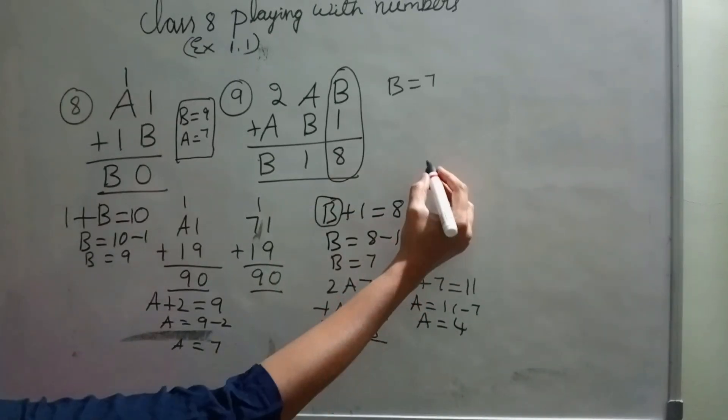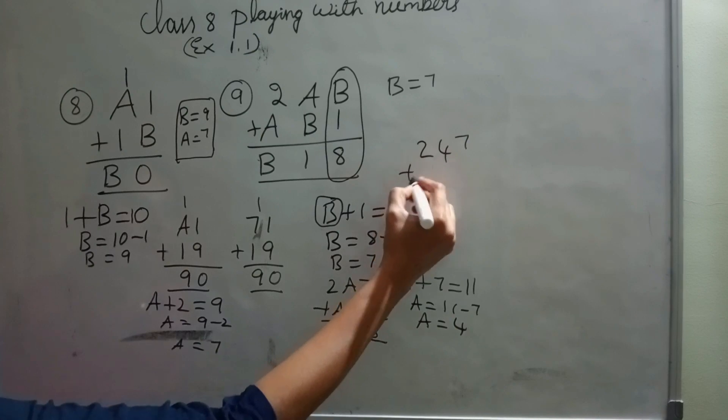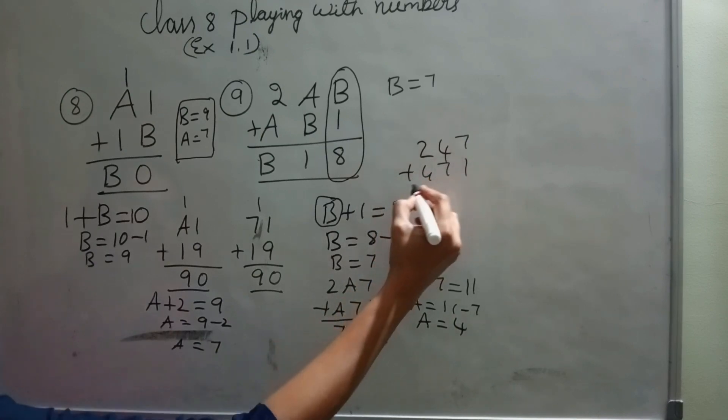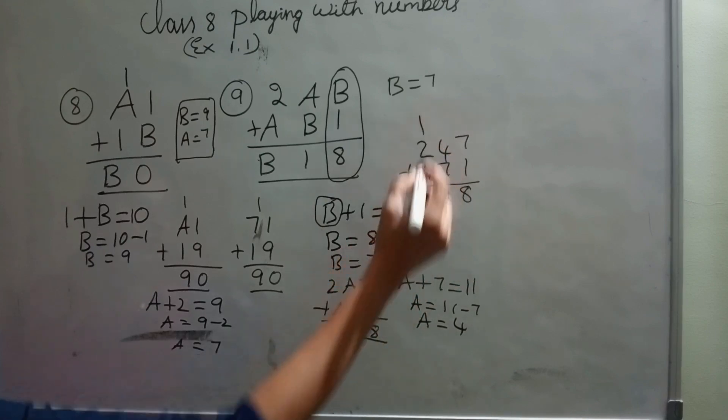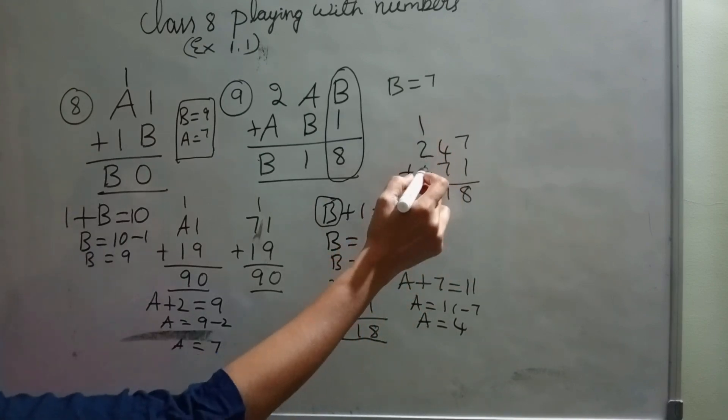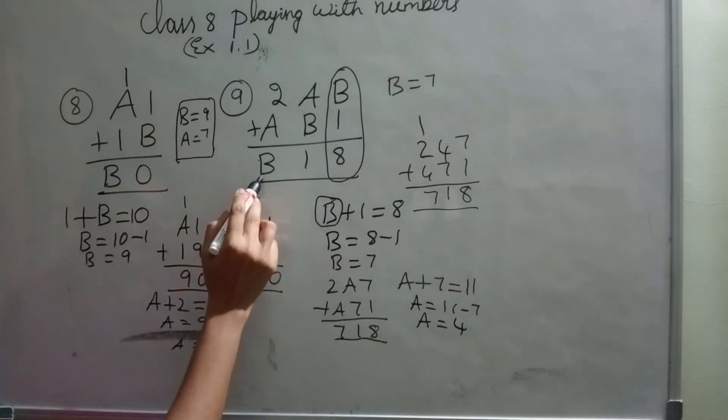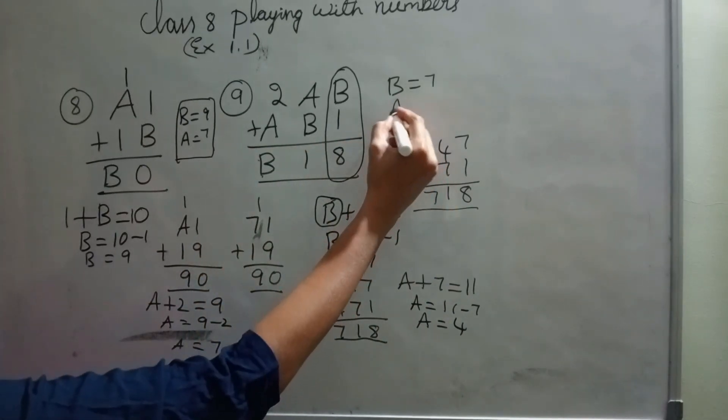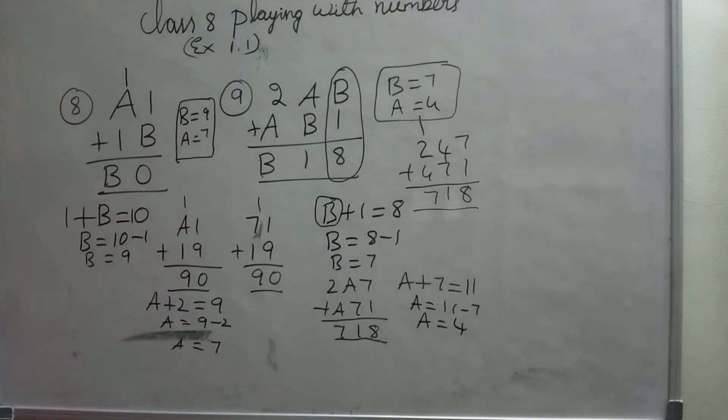Let's check. A is 4, B is 7. Plus 471. 7 plus 1, 8. 7 plus 4, 11. 2 plus 1, 3. 3 plus 4, 7. B equals 7. I got A equals 4. So A equals 4 and B equals 7 is the correct answer.